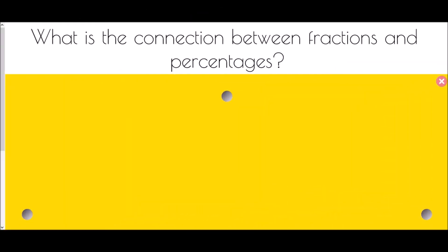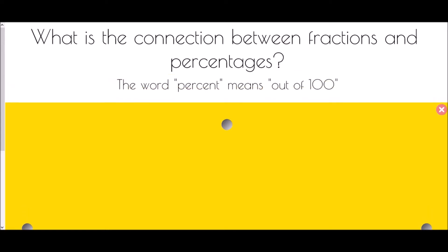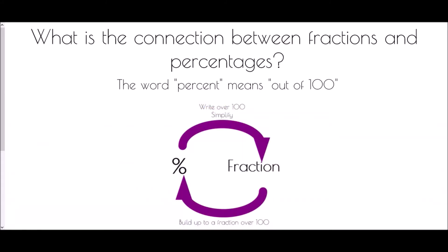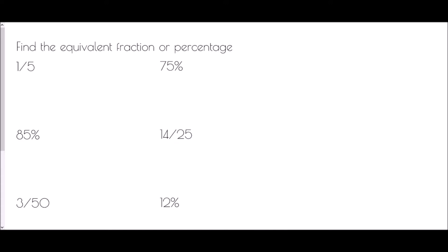First of all we want to look at the connection between fractions and percentages. This all comes from what the word 'percent' actually means — percent means out of 100. To convert a percentage into a fraction, you simply write it over 100 and then simplify it. To turn a fraction into a percentage, we build up to a fraction over 100 by finding equivalent fractions until we reach a denominator of 100.